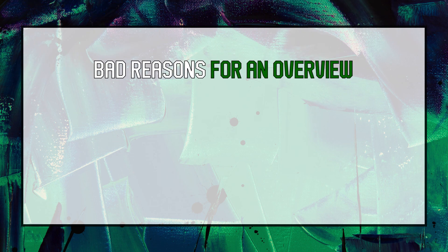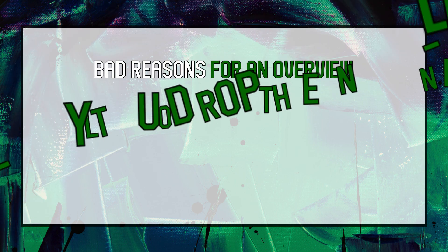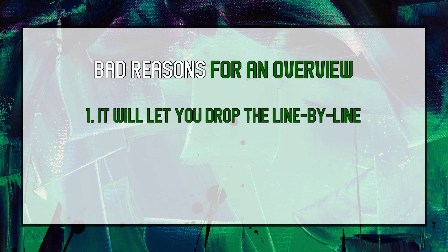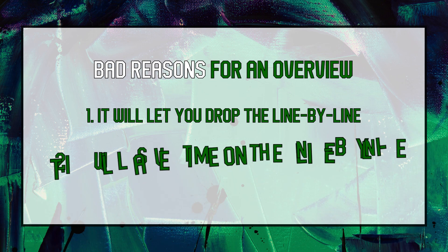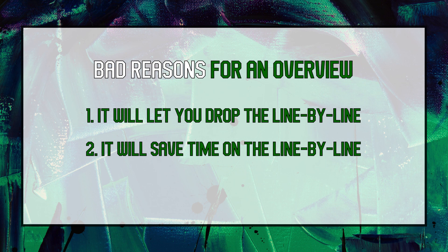On the other hand, there are two common bad reasons students give for including an overview. First, you think that by extending your thesis and impact in the overview, it won't matter as much if you drop line-by-line arguments. But this isn't true — extending your 1AC does not answer the 1NC, so you're still dropping or functionally dropping those arguments. An overview must accomplish something that can't be accomplished as well on the line-by-line; it cannot replace the line-by-line. Second, you think that extending your thesis and impact in the overview will save time on the line-by-line. This isn't true either — you'll either repeat yourself when answering 1NC arguments, or dismiss specific objections by asserting 'that was above,' referring to a prescripted generic overview. This neither saves time nor improves argument quality. An overview is by definition an addition to your speech — only include one if it creates enough value to justify the extra time.